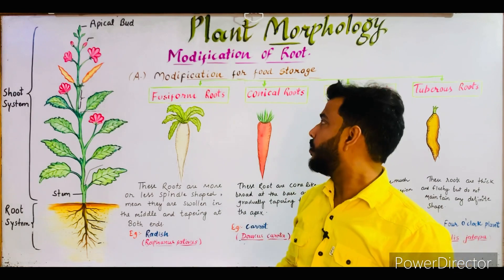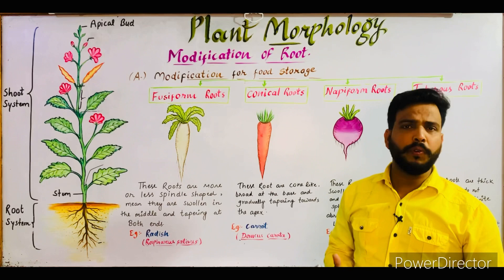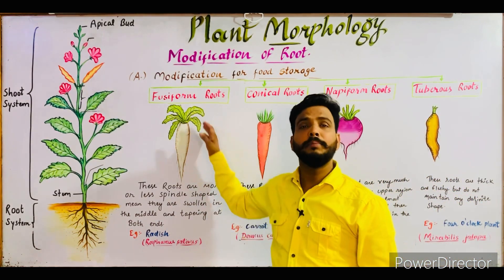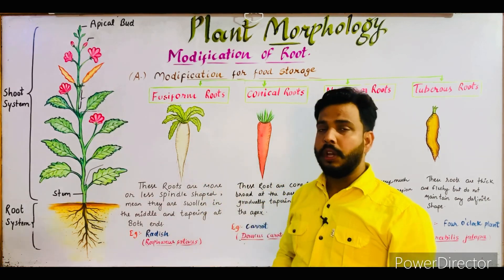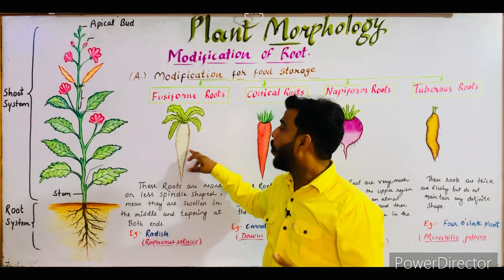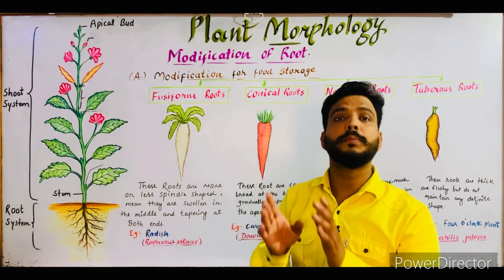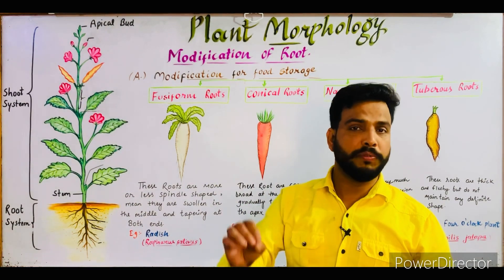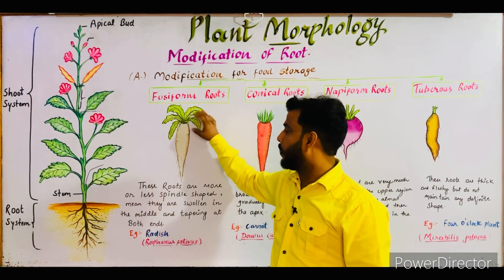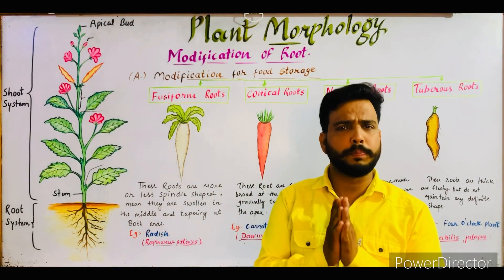The first modification is known as fusiform. The best example of a fusiform root is radish. As you can see in this diagram, the root is swollen in the middle while tapering towards both ends. This type of shape is termed a spindle shape structure, also known as fusiform. So this is the first modification of a tap root — the fusiform root — which is more or less a spindle shape.